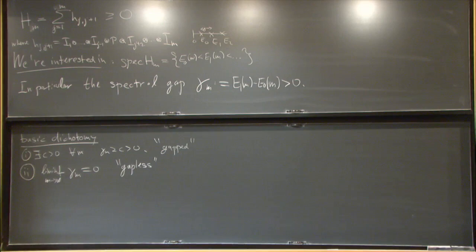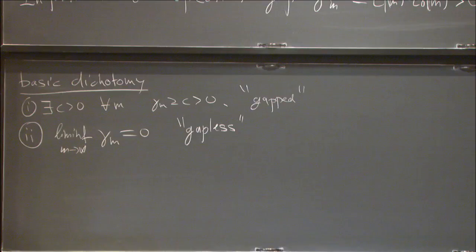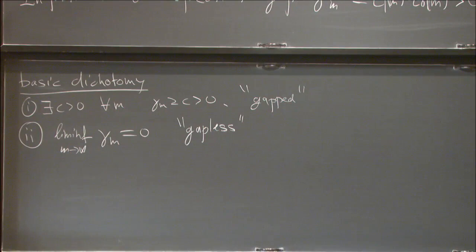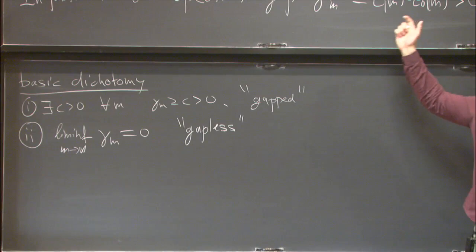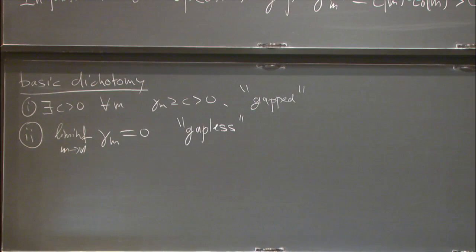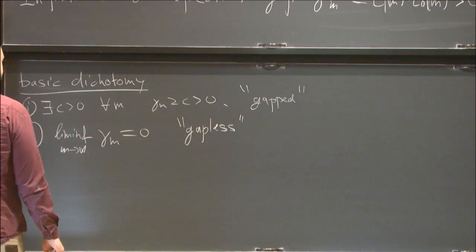Case one is the gapped case: there exists a uniform constant C such that gamma_M is bounded below by C for all M. The complementary case is the gapless case: the limit of gamma_M is zero. Given these notions, we put a system in one of two categories — gapped or gapless — depending on which case it satisfies. If the system is finite-dimensional and E_0 has multiplicity, the gap is defined in the strictly ordered sense.